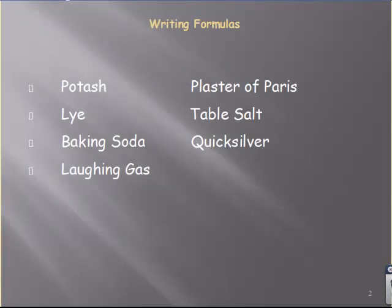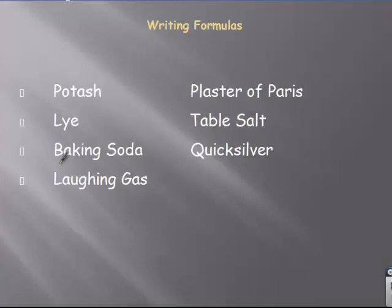But before they had names, they used things such as common names for chemicals. You probably have used some of these. Maybe you know or heard of the chemical name for baking soda, or table salt, or quicksilver being mercury. Laughing gas N2O, lyes, sodium hydroxide used in soap, and maybe a few others you could name off the top of your head. Ammonia, for example.